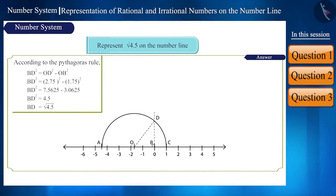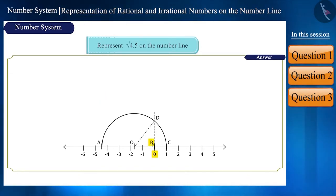To represent this on the number line, we consider point B as 0 and point C as 1 and by taking the radius as BD, we will draw an arc on the number line like this. This point on the number line will represent root 4.5. In this way, we can represent any positive real number on the number line.